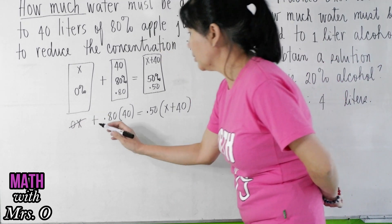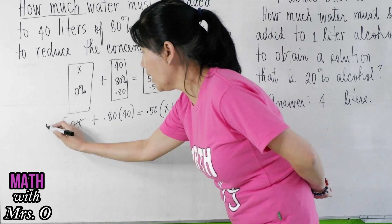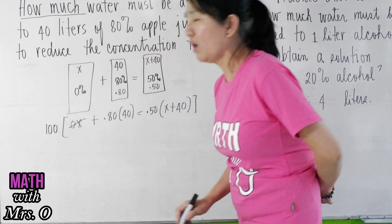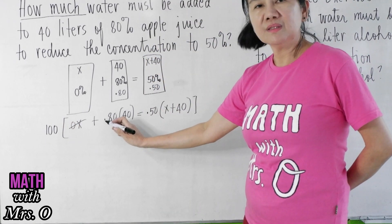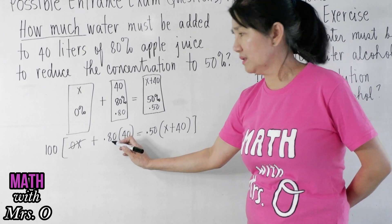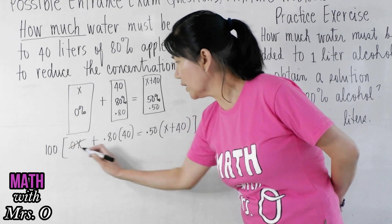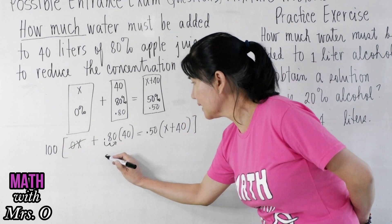So in cases like this, you better multiply everything by 100. Why? So that you can remove the decimal and make it a whole number. So if you multiply this by 100, this becomes 0, this becomes 80.